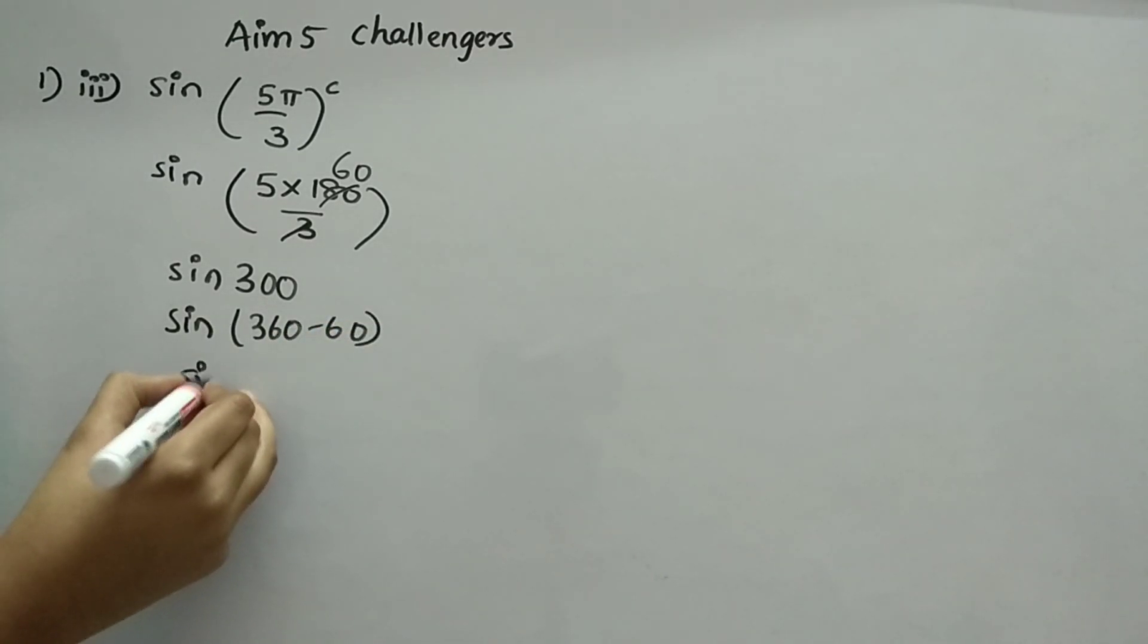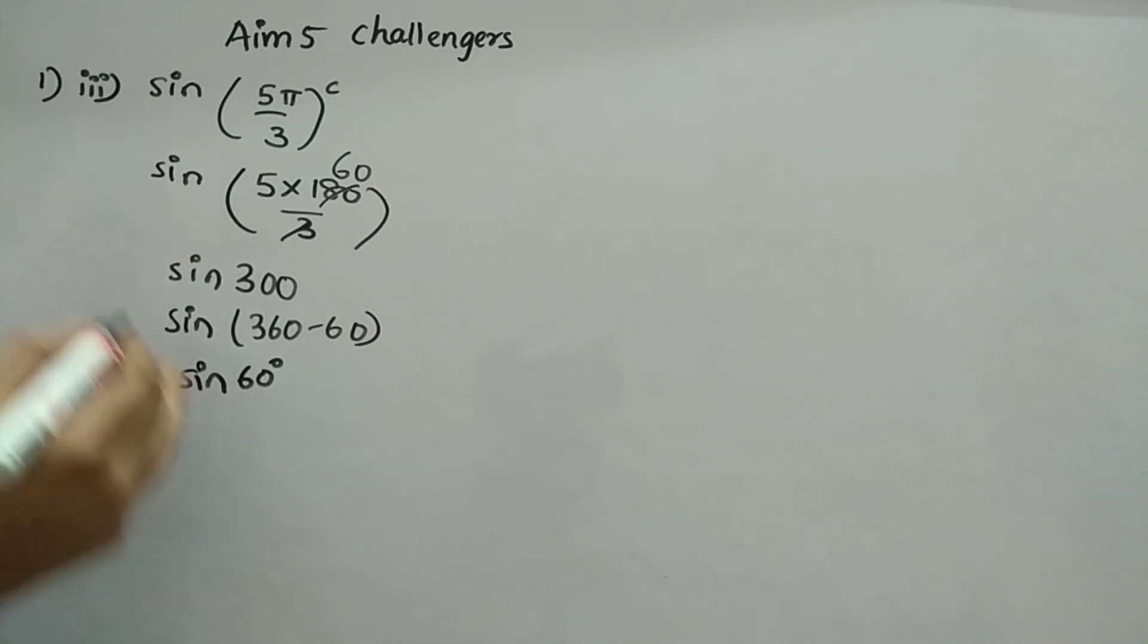Now, sine 60. Everything I explained. So, directly I am just solving. Minus it is there. Because, due to sine. That's why it is minus. Now, minus root 3 by 2. That's it.